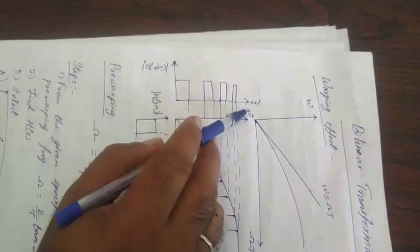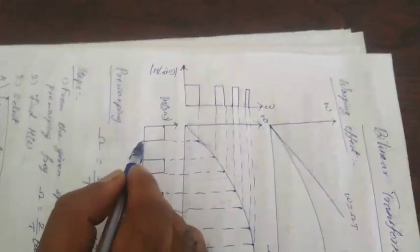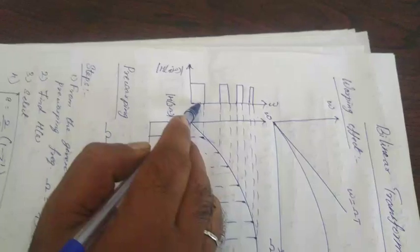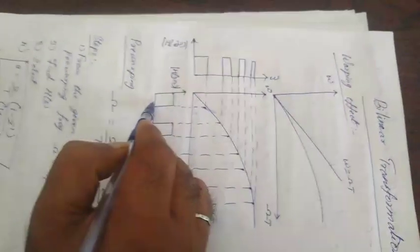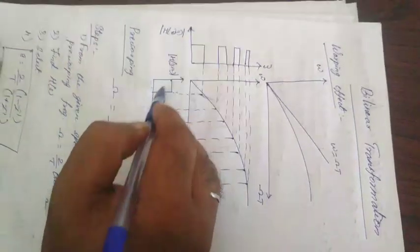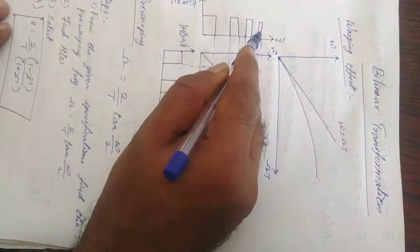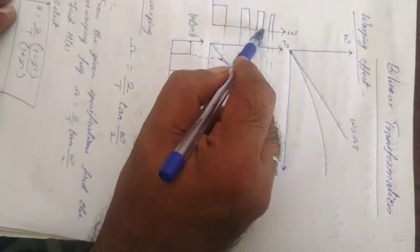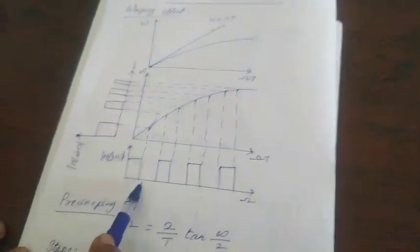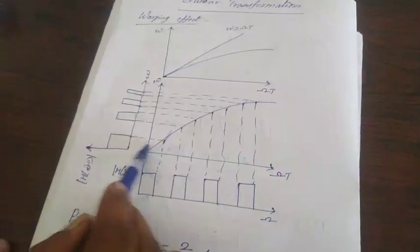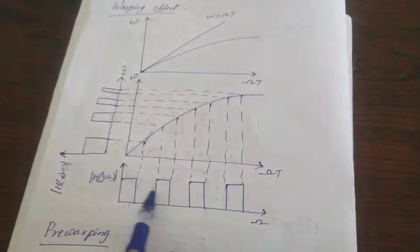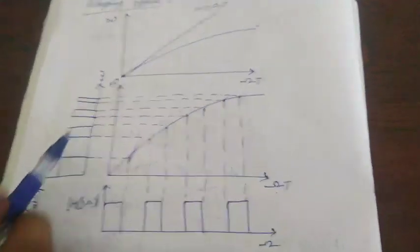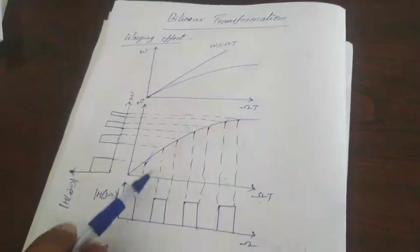The gain of digital filter as well as frequency, it is the plot pattern. You are getting the same width you are getting here. But after some time, some distance, the width is gradually decreasing. This effect is called as warping effect.